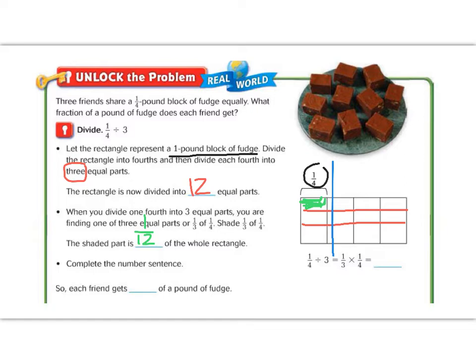So complete the number sentence, each friend will get one-twelfth of a pound of fudge. So we can look at this as one-fourth divided by three equals one-third times one-fourth. You can think of fraction division with a phrase, keep, change, flip. We're going to keep one-fourth. We're going to change the operation. Then we're going to flip three upside down. If three had an invisible one underneath it, then flipping it upside down would make it one-third. And then we can multiply straight across the top, one times one is one, and straight across the bottom, three times four is twelve, which gives us our answer, one-twelfth.